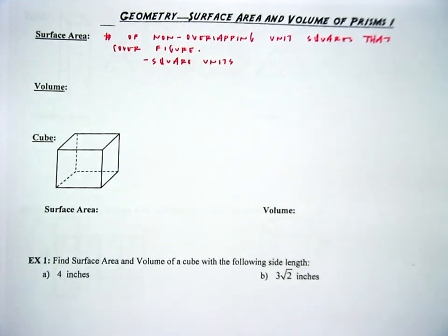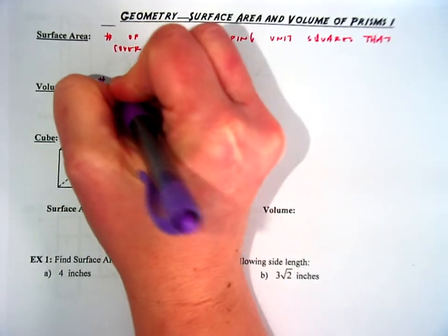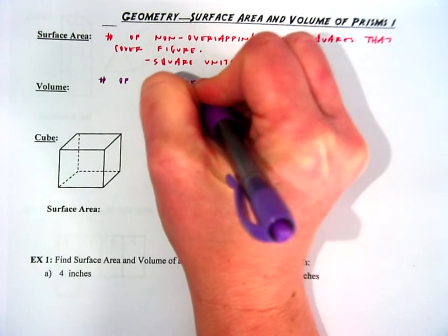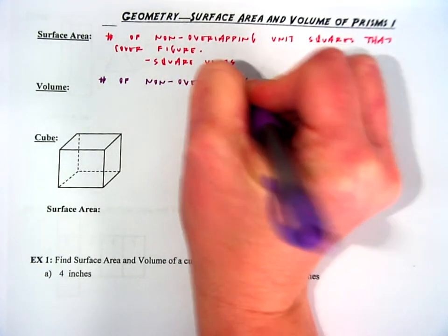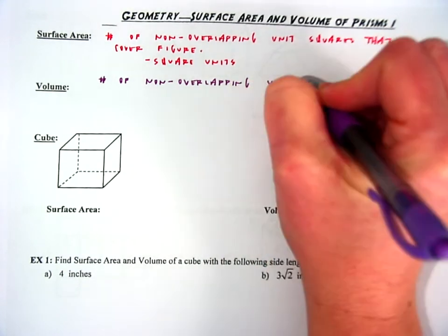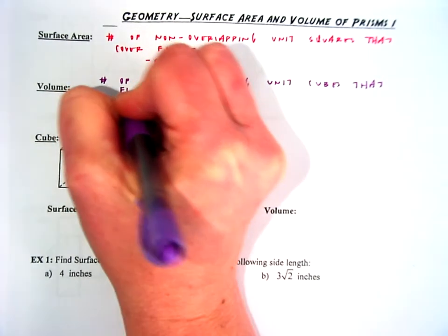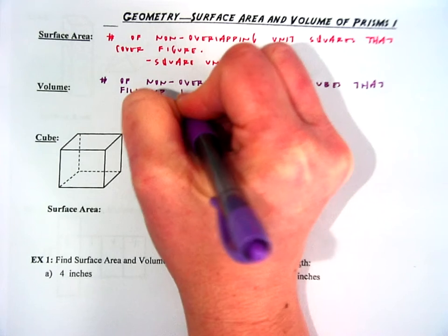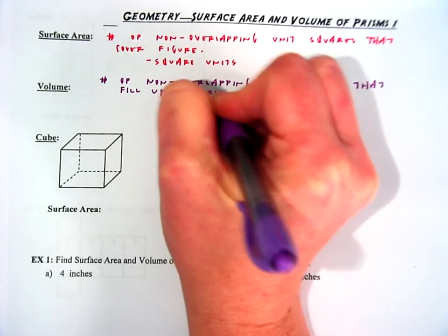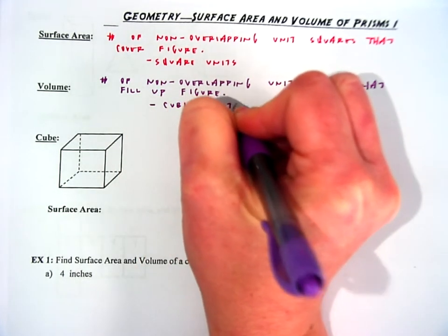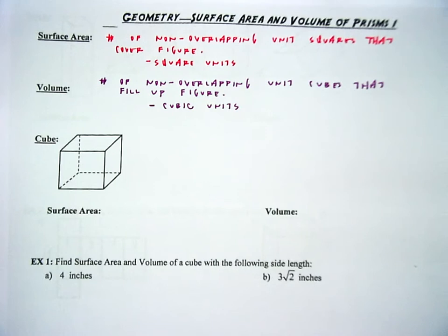Volume — we're looking at the number of non-overlapping unit cubes that fill up a figure, which is why we refer to it in cubic units or units cubed. You could picture the water that fills up a fish tank; we're looking at the volume of the fish tank.